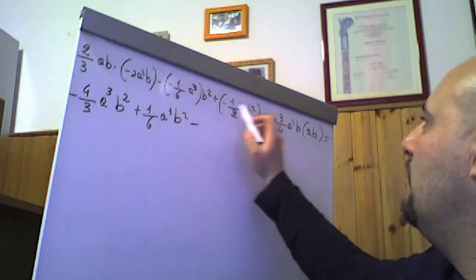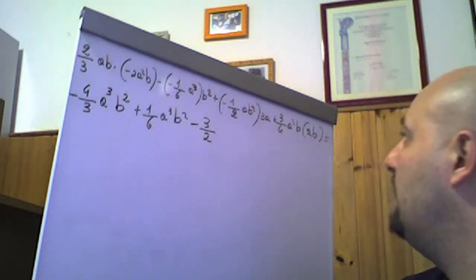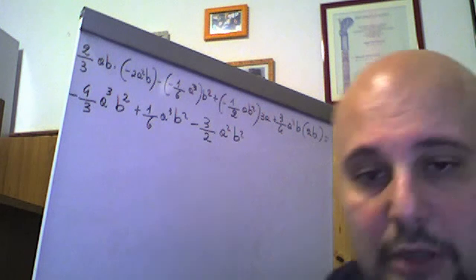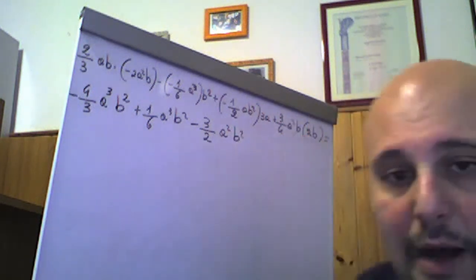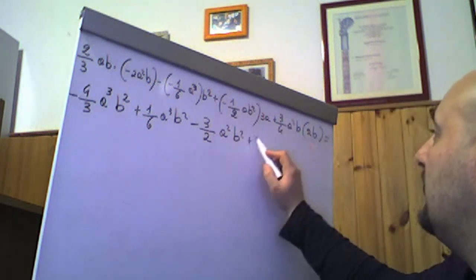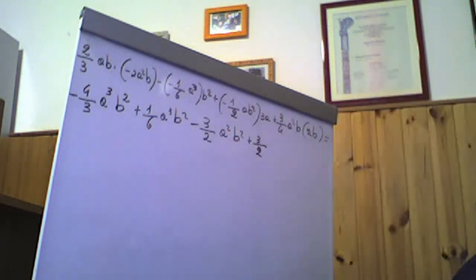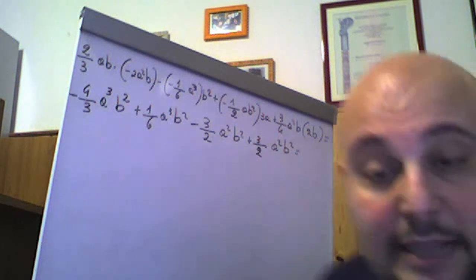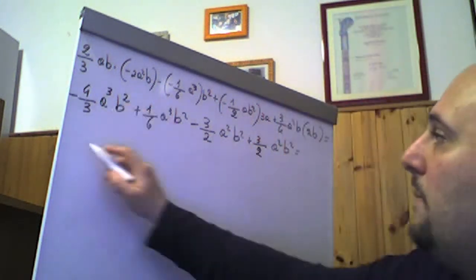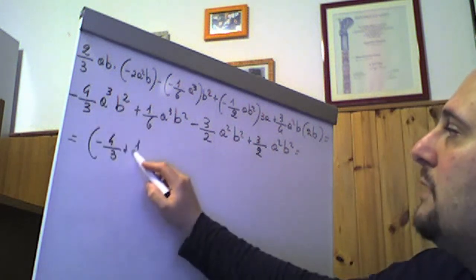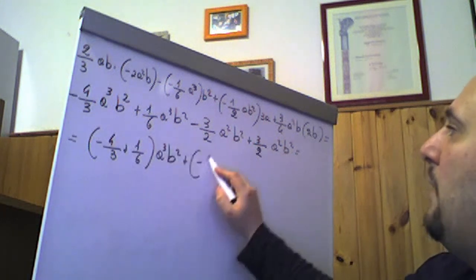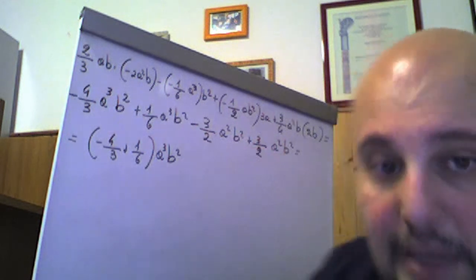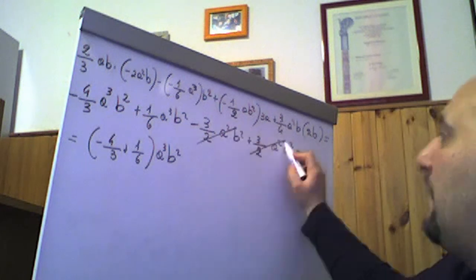Poi 3/4 × 2 = 6/4 = 3/2, a², b × b = b³ → +3/2 a²b³. I monomi simili sono il primo con il secondo (−4/3 + 1/6 a³b²) e il terzo con il quarto (−3/2 + 3/2 a²b²). Il terzo e il quarto si annullano: −3/2 + 3/2 = 0. Per −4/3 + 1/6: minimo comune 6, −8/6 + 1/6 = −7/6. Il risultato è −7/6 a³b², un monomio di quinto grado.